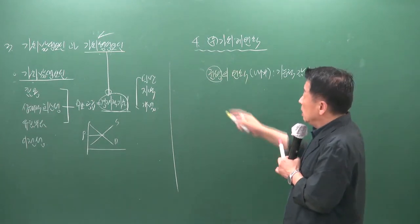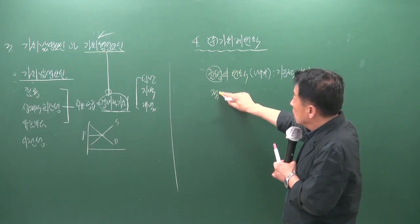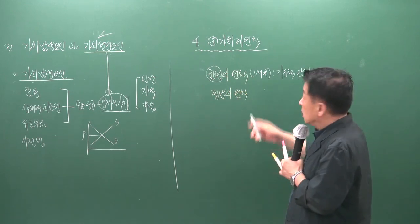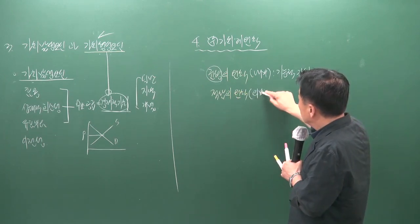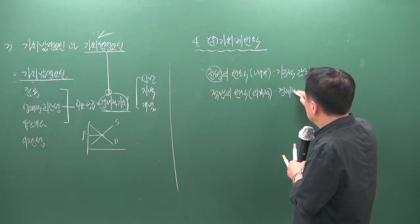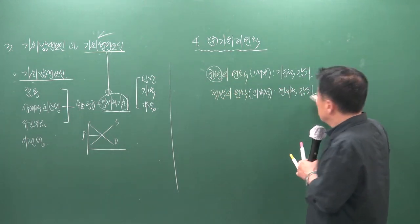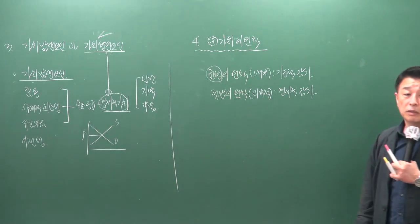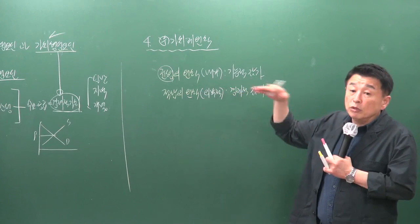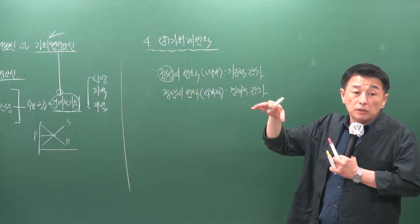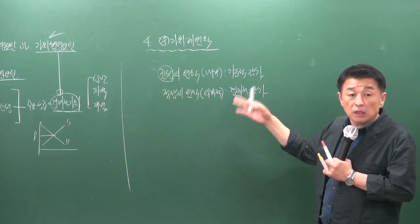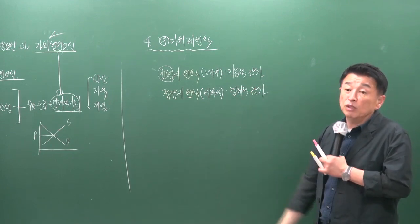균형의 원칙과 함께 등장하는 것이 적합의 원칙입니다. 적합의 원칙은 외부적 측면의 원칙으로 경제적 감가의 근거가 됩니다. 시험에서 균형의 원칙을 통해 원가 방식에서 경제적 감가를 적용한다고 하면 틀린 지문입니다.